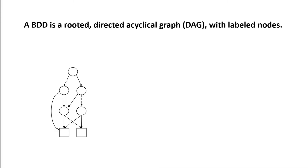A binary decision diagram is a rooted directed acyclical graph with labeled nodes. The two sink nodes, called terminal nodes, are labeled with the Boolean constants 0 and 1. The remainder of the nodes are called decision nodes and they are labeled with the Boolean variables — a single variable for each node. Every node can have at most two outgoing edges, either the zero edge or the one edge.